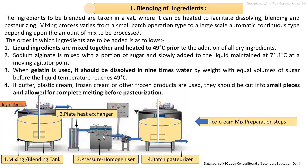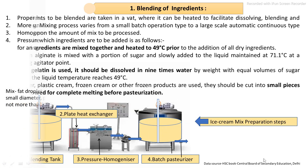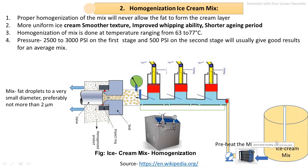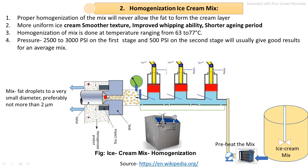After the mixing process in the blending tank, the mix is passed into the plate heat exchanger, then into the homogenization process, followed by the batch pasteurization process. In the homogenization process, the mix containing all ingredients — including fat globules — requires those fat globules to be reduced in size.